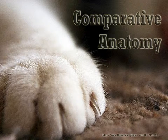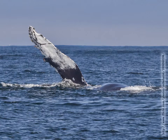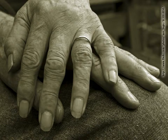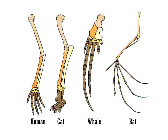A cat's paw. A whale's flipper — it's not a fin. A horse's hoof. And finally, human hands. What do these have in common? All of these are thought to come from a common ancestor, as they have the same overall bone structure.